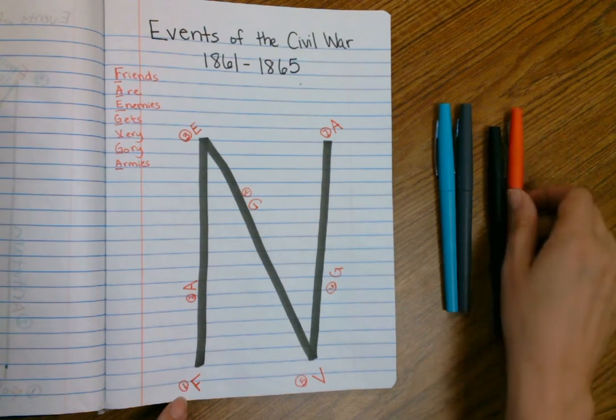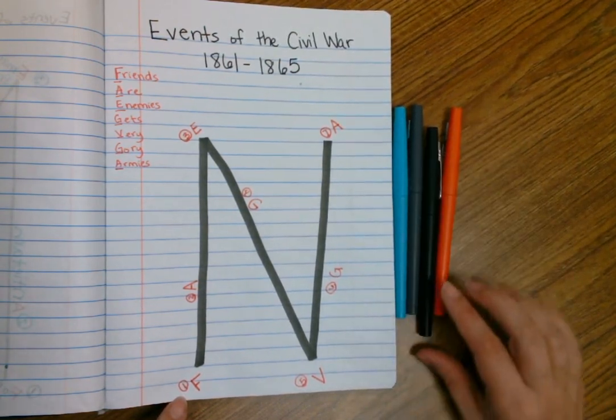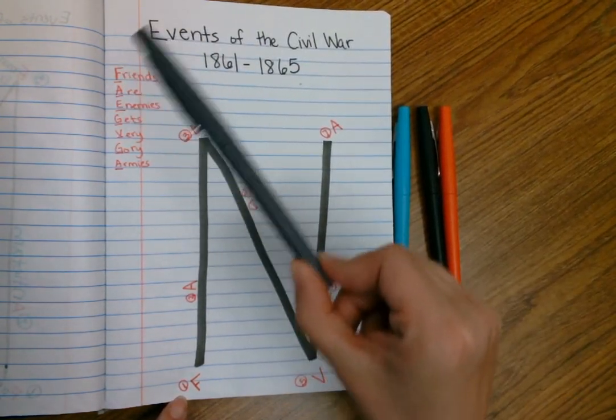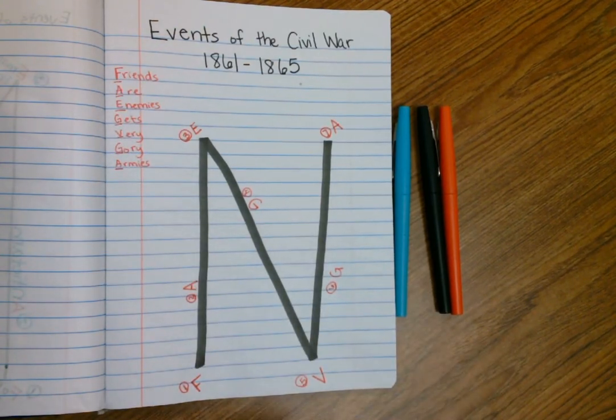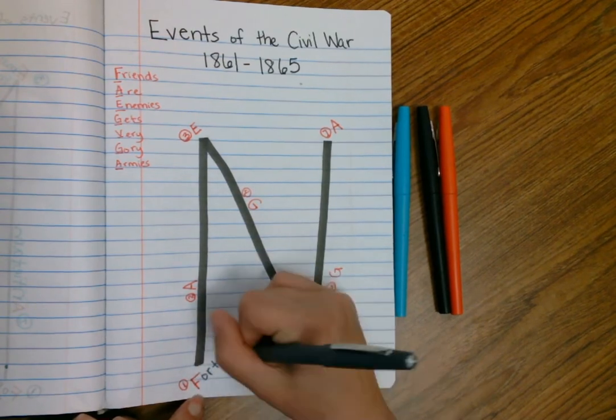All right, here is our first one. You know how I like to color code stuff. You don't have to, but I like to. I'm going to grab my gray one because that's who's going to win, the boys in gray. So that should tell you right there it's the South. The first one, this F, is going to be the battle at Fort Sumter.